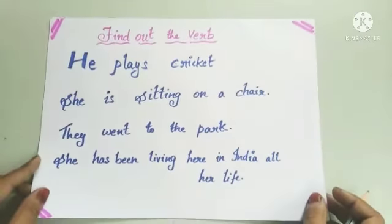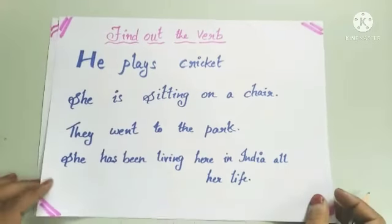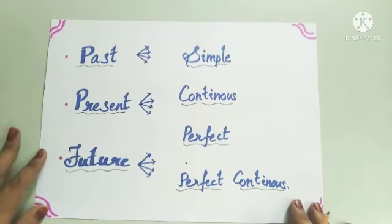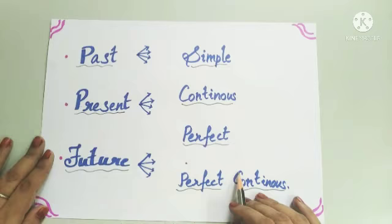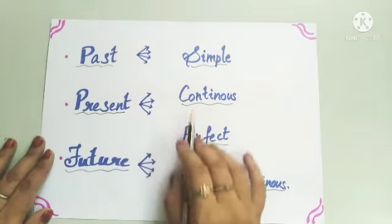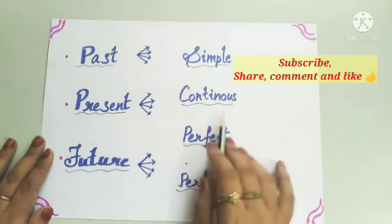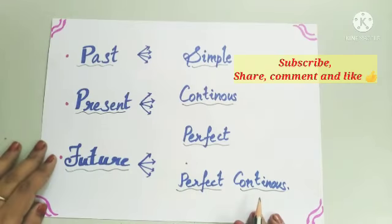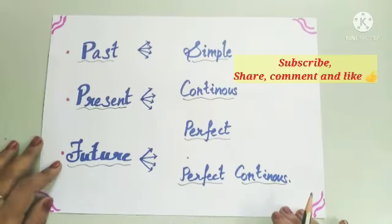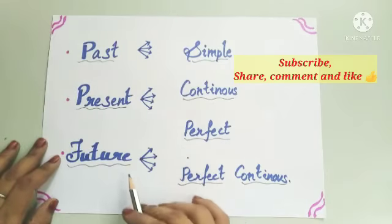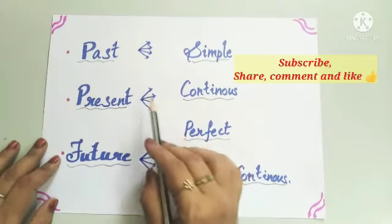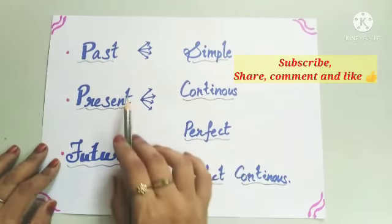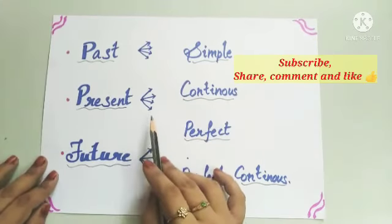These four kinds are again subdivided. Past tense is divided into four kinds, present tense into four kinds, and future tense also into four kinds. Coming to past tense: simple past tense, past continuous, past perfect tense, and past perfect continuous tense.